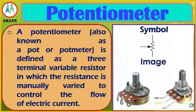Potentiometer: a potentiometer is defined as a three-terminal variable resistor in which the resistance is manually varied to control the flow of electric current.